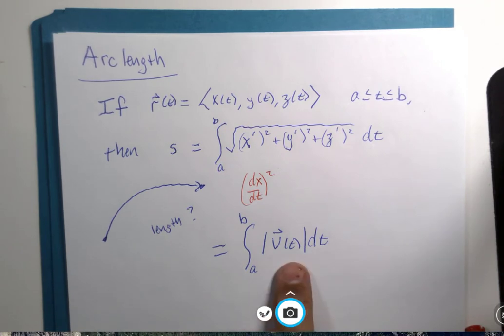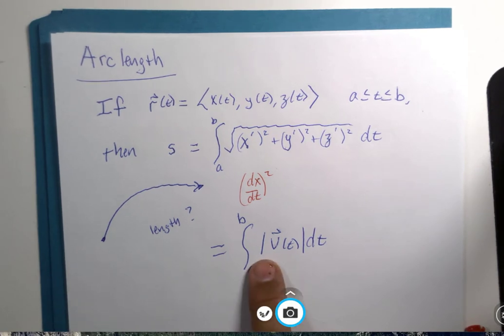So, if you integrate the velocity vector, it will help you find the length. Let me rephrase that. If you integrate speed, you will find the length. Or, you could say rate times time equals distance. Distance equals rate times time.